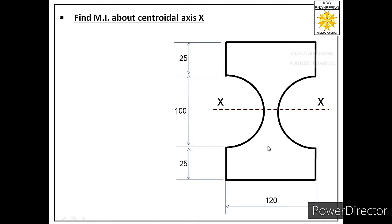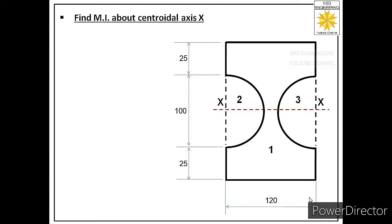The first step is that we should divide this composite area into regular areas. The best option is to consider this as a rectangular area, and from that rectangular area subtract the semicircle on both sides. So we divide the composite area into three regular areas: first, the complete rectangular area; second, the semicircular area on the left; and third, the semicircular area on the right. So we consider a complete rectangle of 120 by 150 and subtract two semicircles on both sides to get the composite area.